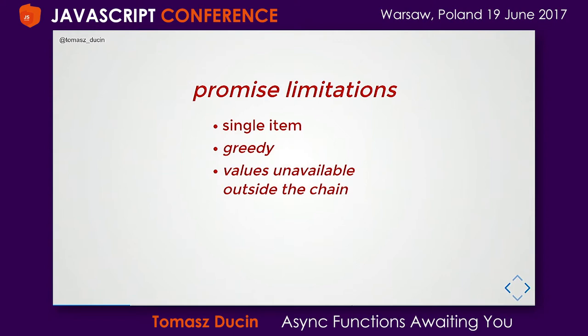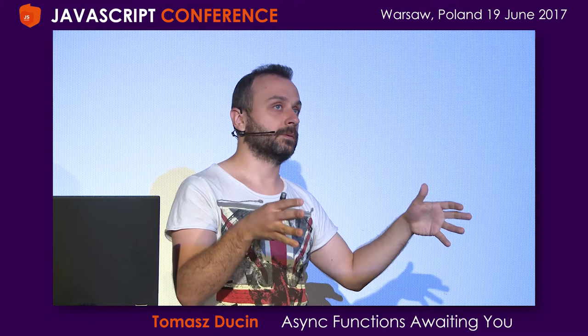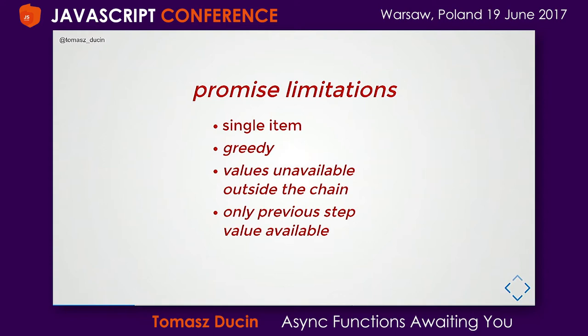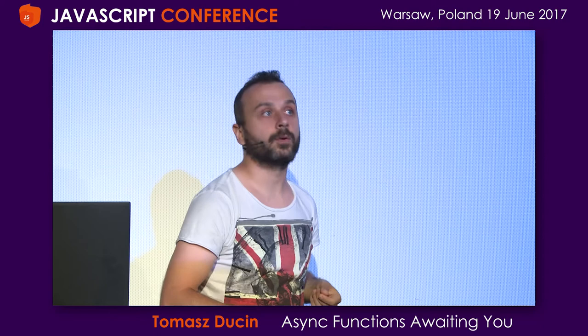Values are unavailable outside the chain. A promise results with a value that becomes available for the next steps, but there is no possibility to access a value outside the chain — if we try to do it outside the chain, we're in the synchronous thread, so we cannot access it. Finally, in a promise chain you always only access the previous value; accessing the first, second, or third out of five steps is not possible in a clean way. Async/await addresses these kinds of limitations.